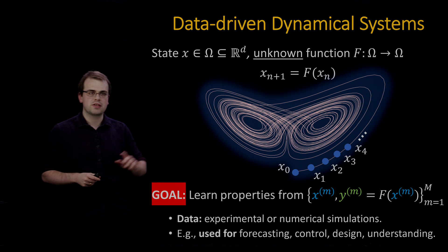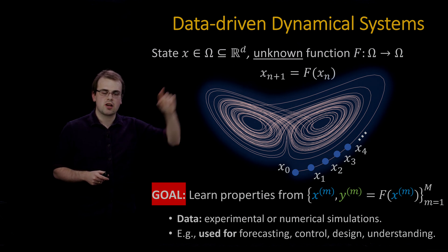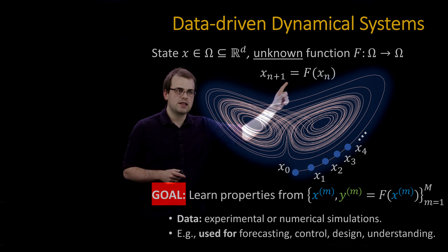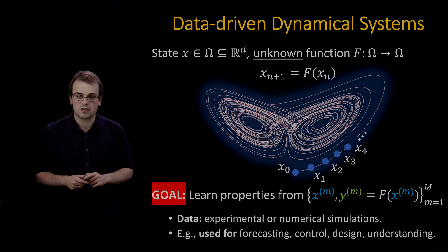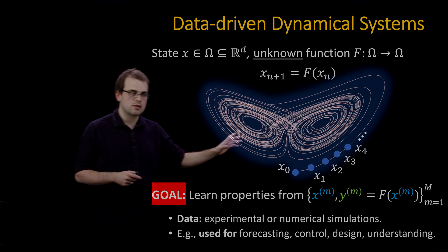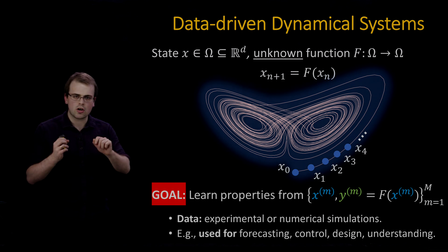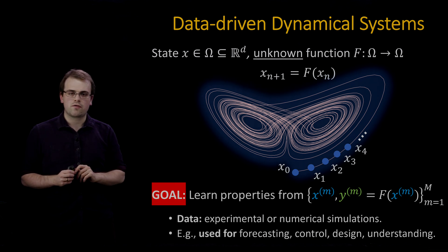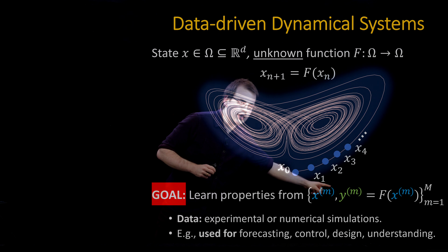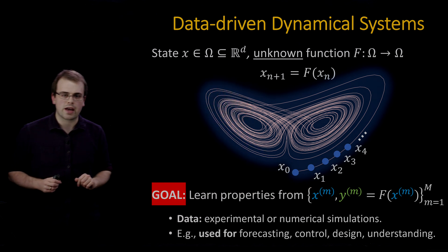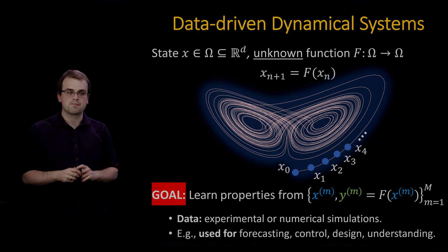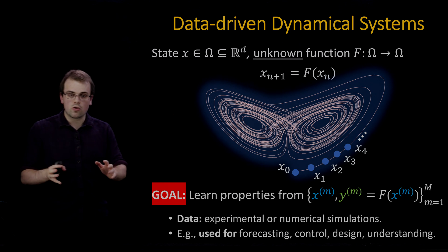I'm interested in a dynamical system with a state x inside some state space omega, governed by an unknown function f, so the state at time n+1 is given by f of the state at time n — a discrete-time dynamical system. I could also consider continuous-time dynamical systems by looking at discrete time steps. My goal is to learn properties of the system from trajectory data collected in snapshots.